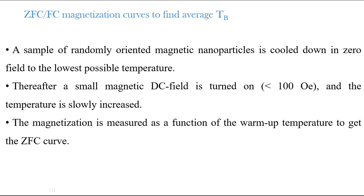The average T_B can be determined experimentally using the zero field-cooled and field-cooled magnetization curves. We have a sample of randomly oriented magnetic nanoparticles. The particles are randomly placed within the sample. We cool the sample in zero applied field down to the lowest possible temperature, which is lower than T_B. At that lowest temperature, we apply a small field. We apply a small field because the anisotropic barrier also depends on the applied field — applying a field would align the nanoparticles in a certain direction, disturbing the energy barrier. To understand the internal behavior, we should apply only a small field.